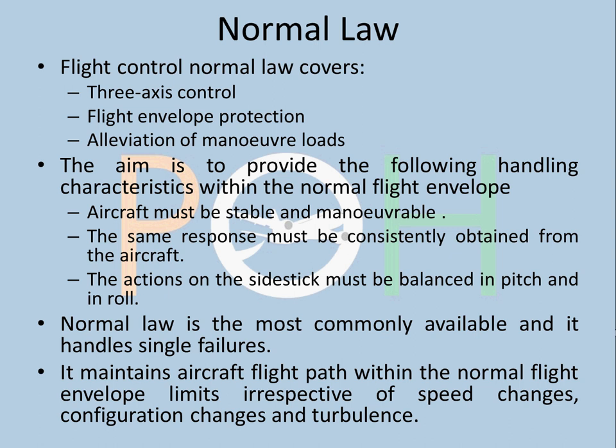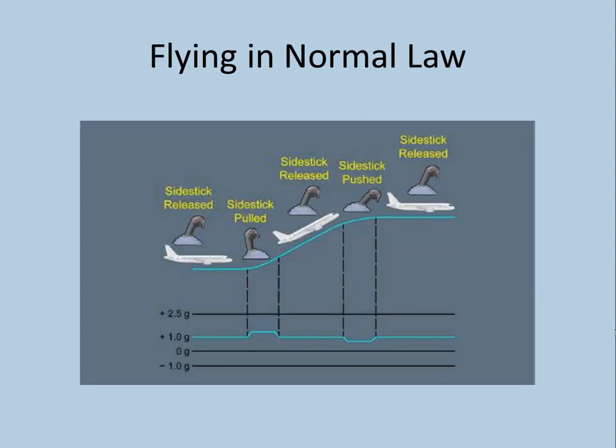Normal law maintains the aircraft flight path within the normal flight envelope limits irrespective of speed changes, configuration changes, and turbulence. What is actually happening in normal law is it is called 1G flying.